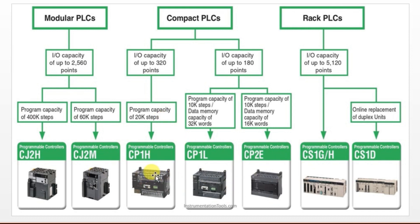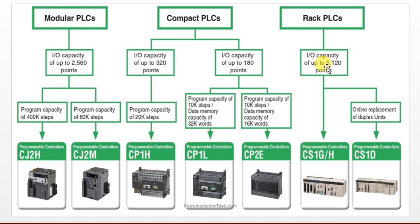Depending on our requirement, we choose the type of PLC. The integrated or compact type PLC has everything in a single unit. In the modular type, you have the option to add IO modules. The rack type PLC is also like the modular type — you can add IO modules and even add expansion racks. Those options give rack type PLC more IO points.